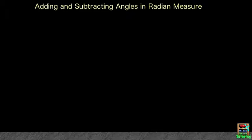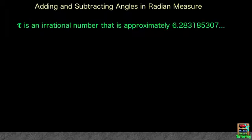In the last video, we learned how to convert degrees to radians. Now let's see how we can add or subtract angles that are already in radians. The most important thing to remember is that tau is a number just like 1 or square root of 2. Its value is approximately 6.28.